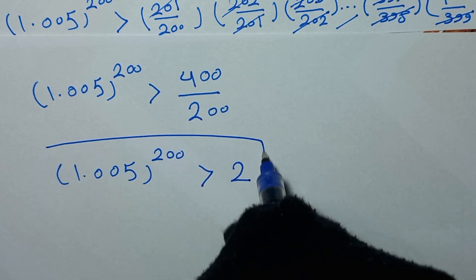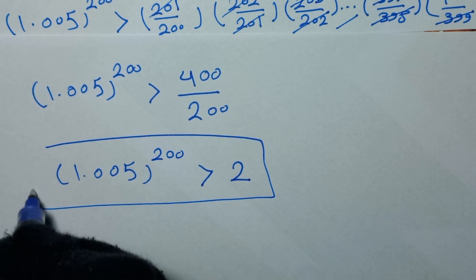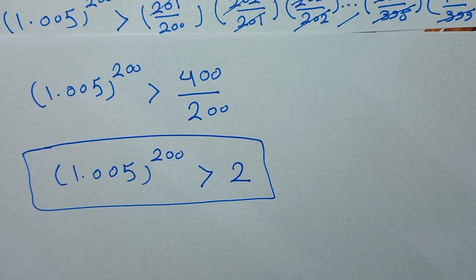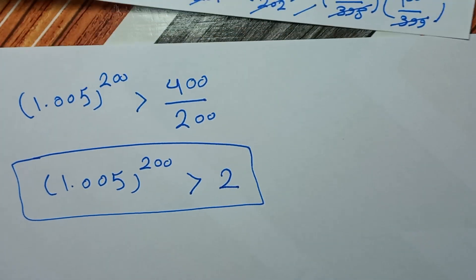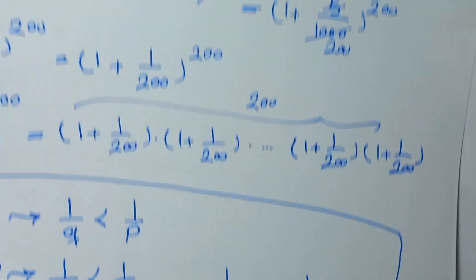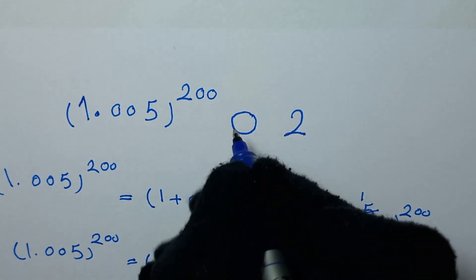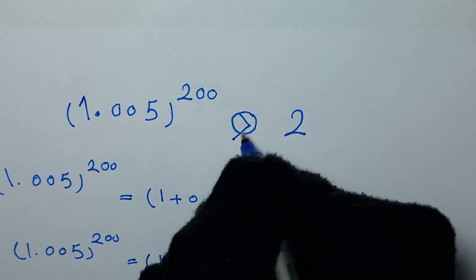So this is our final answer: 1.005^200 is greater than 2.